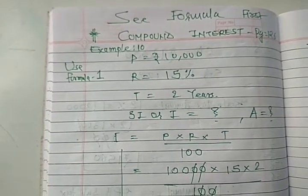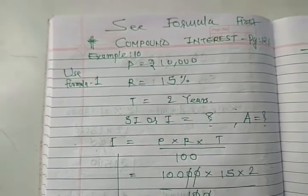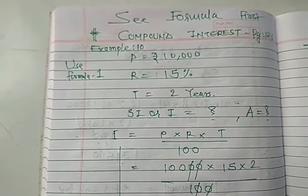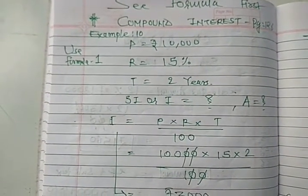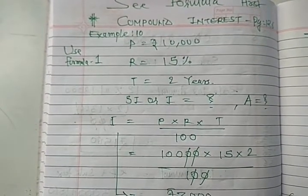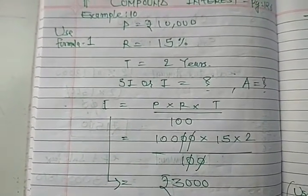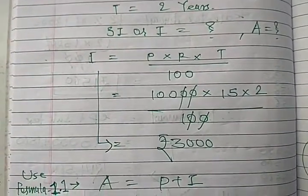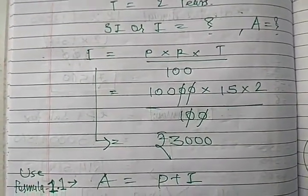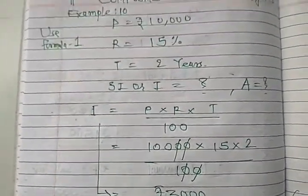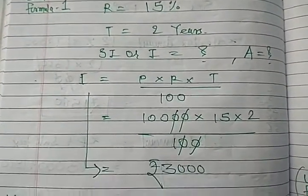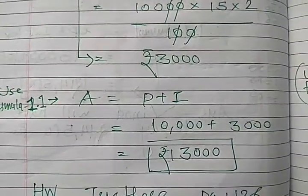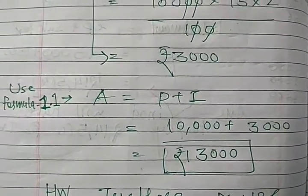Let's start example number 10, page number 126. Now where principal amount is given 10,000, rate of interest 15% is given, T equal to 2 years. Here you have to find out simple interest, not compound interest, and amount. So you have to use I equal to PRT upon 100. So put the values and simplify. You will use formula number 1. And here A equal to P plus I, means formula 1.1 you use. 10,000 plus 3,000 interest, you will get total 13,000.